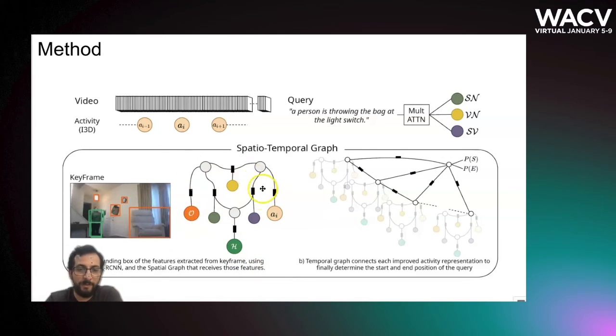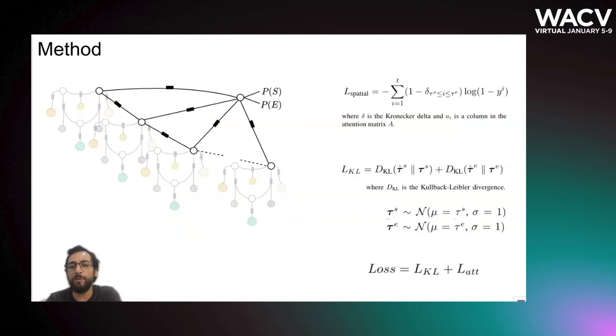We use a message passing algorithm to improve the activity representation conditioned on the language. The activity representation then is connected using a temporal graph to get the start and end. We train our network using a spatial loss and a KL divergence loss that has been previously proposed.